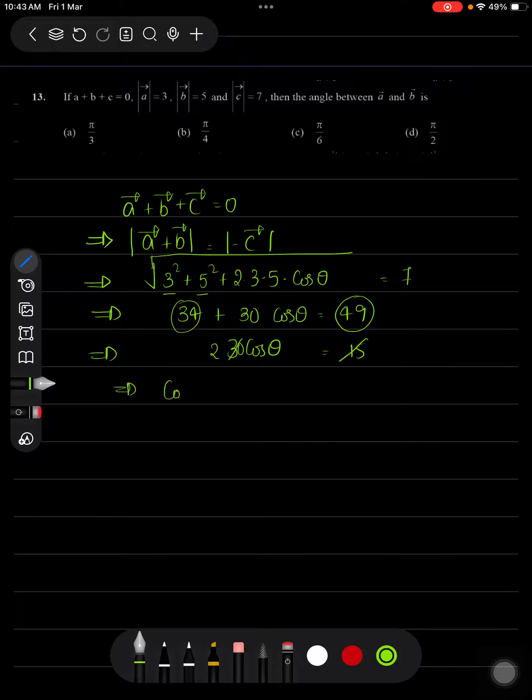We'll be getting cos θ = 1/2, or θ will be equal to 60 degrees or π/3 radians, which is option A. Thank you.